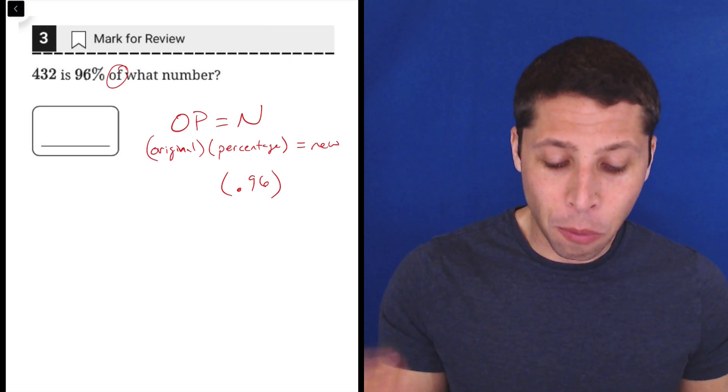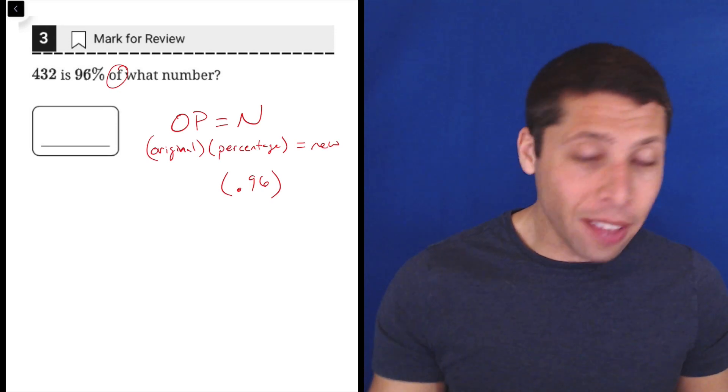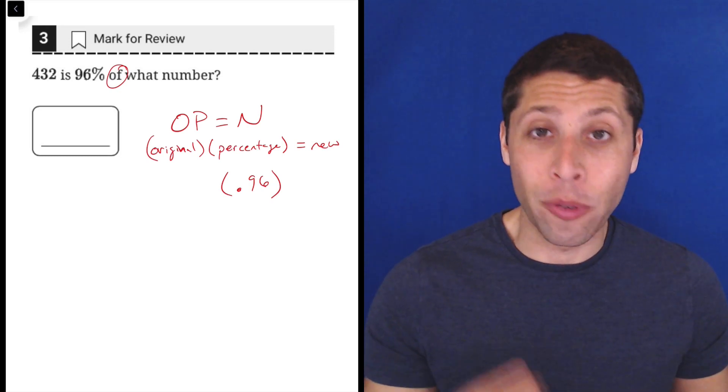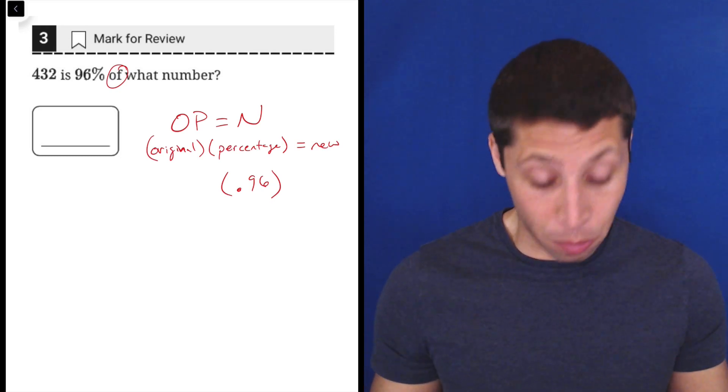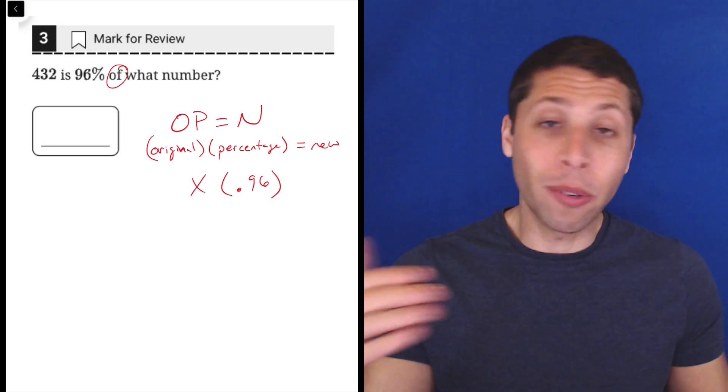Now, what is this 432? 432 is not the original value. That is the new value. That is the result of taking 96% of some other number that we don't know. So we don't know the original.